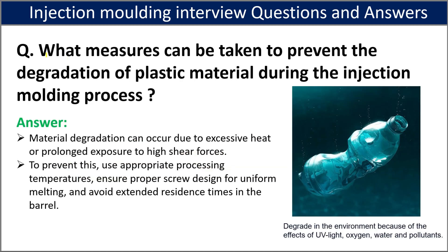The last question is: what measures can be taken to prevent degradation of plastic material during injection molding? Material degradation can occur due to excessive heat. To prevent this, use appropriate processing temperatures, ensure proper screw design for uniform melting, and avoid extended residence time in the barrel.